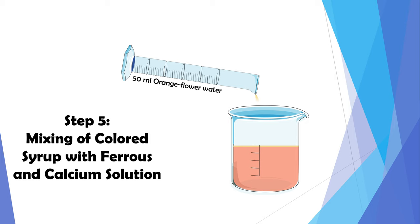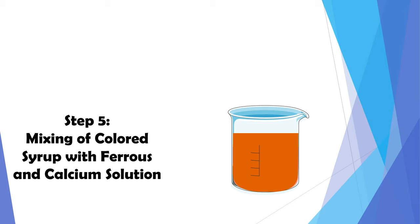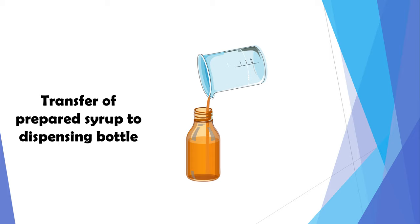By the end, our compound ferrous phosphate syrup is prepared. After the preparation of this syrup, it is transferred into a dispensing bottle.